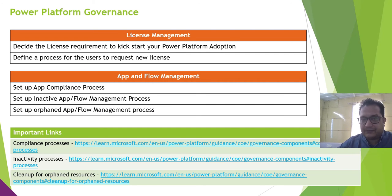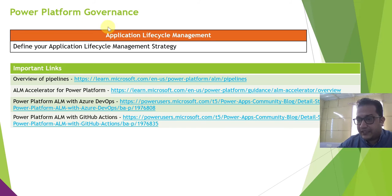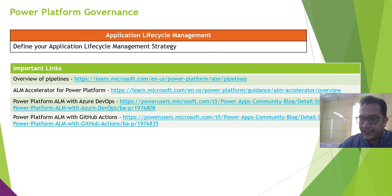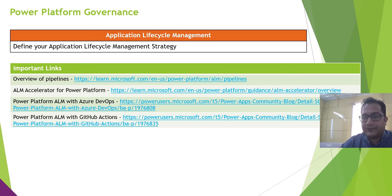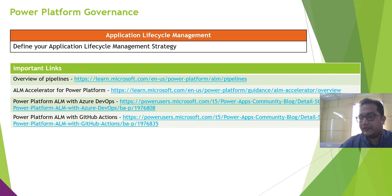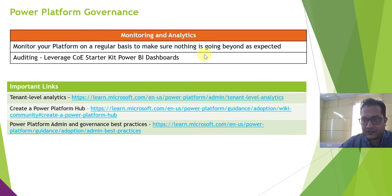Another very important topic is ALM — Application Lifecycle Management. You should define your ALM strategy. If you are new to Power Platform, you might start with a manual deployment process, but ideally in the long run you should implement CI/CD — continuous integration and continuous deployment — using pipelines available in Power Platform. Next is monitoring and analytics: monitor your platform on a regular basis as a Power Platform admin to make sure everything is running as expected.